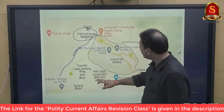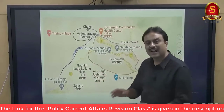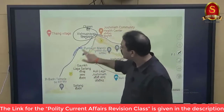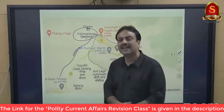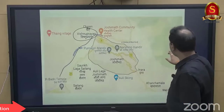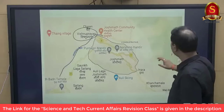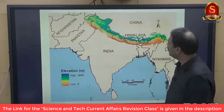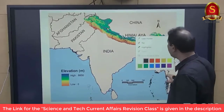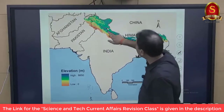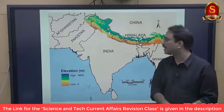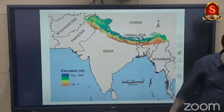Near Joshimath are important locations: Auli (skiing), Gongkha Laga, and the road to Badrinath Temple. Between Joshimath and Badrinath, a trekking route begins for Hemkund Sahib and Valley of Flowers. On the broader Uttarakhand map, Joshimath is located at the northernmost part of the state, in the Greater Himalayan zone of Garhwal.